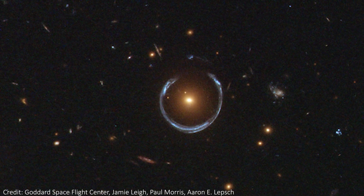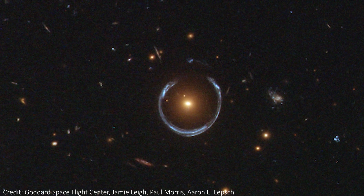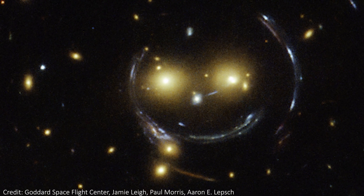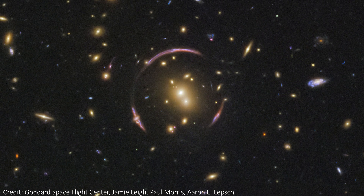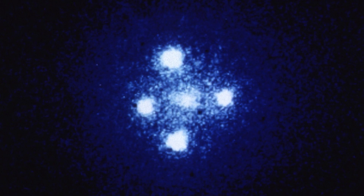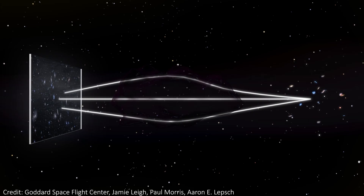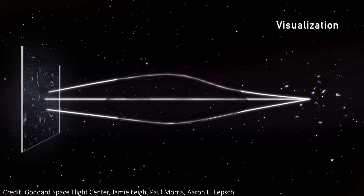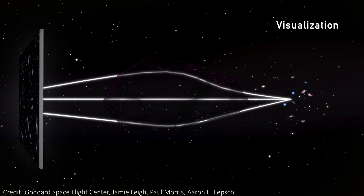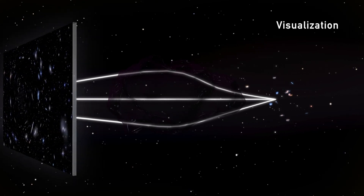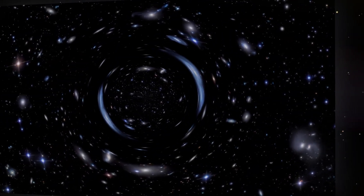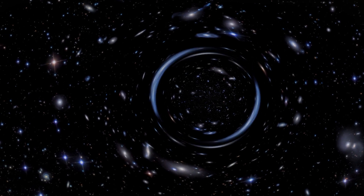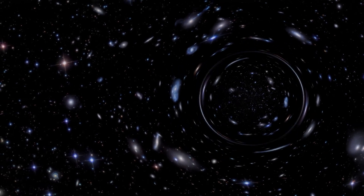Whether a lens object forms an entire ring, like we're seeing here, or forms an arc, or even repeated images like we see in something called an Einstein cross, all depends on the alignment of the Earth with the lens galaxy and the lensed galaxy. Perfect alignment with all three of those objects in a row gives us an Einstein ring, appearing as pretty much a full circle of light in this new image.